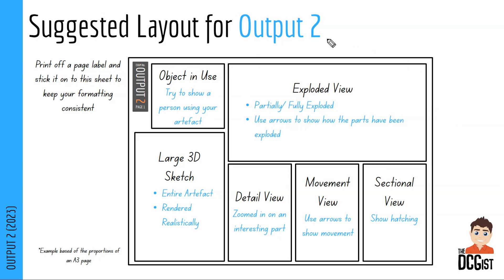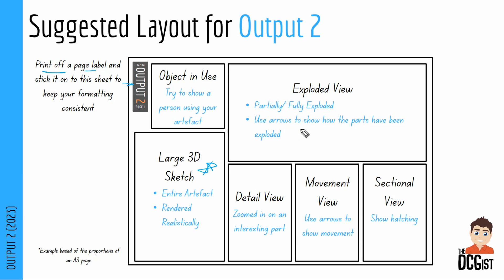With all of that in mind, here is the suggested layout I would use for output 2. You can move these boxes around as you wish, but these are the general sizes I would use. First, I would always print off the page label — the one in the top corner — and stick it on so that you're consistent with the rest of your project. Even though this page is all sketched and annotated by hand, it will help it fit in with the rest of your project. The most important sketch is your large 3D sketch — that could even be bigger — of the entire artifact rendered realistically. The next biggest is the exploded view, partially or fully exploded with arrows showing how parts have been exploded. It takes up a lot of room but gives a lot of information, so it's well worth it.